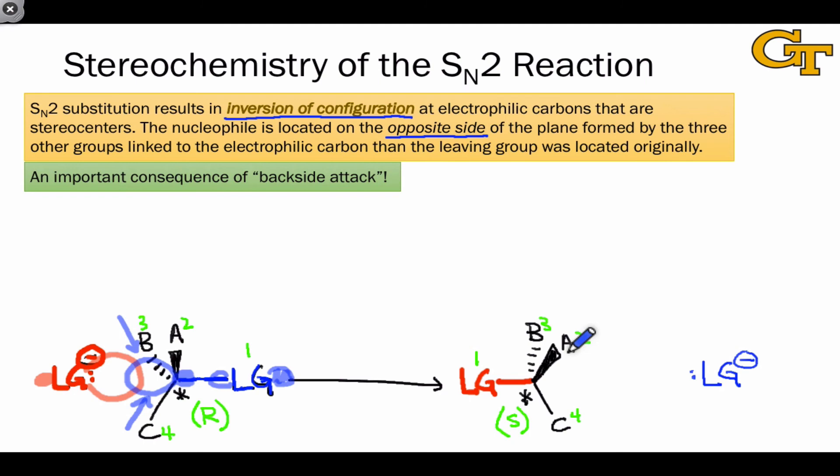Of course, this umbrella flipping of the groups A, B, and C in going from reactants to products occurs regardless of whether the electrophilic atom is a stereocenter or not. So it's important to keep in mind as a general feature of SN2 reactions. But it's most important when the electrophilic carbon is a stereocenter.